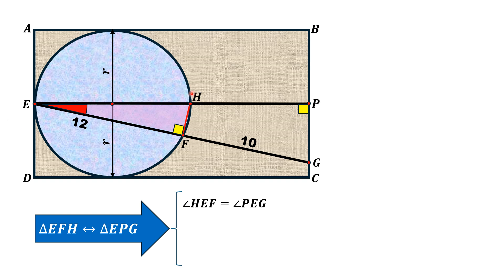Also, the angle EFH is equal to angle EPG because both angles are 90 degrees. Since two of the angles in two triangles are similar, the third angle must be similar. Now, by angle-angle similarity, these two triangles are similar to each other.